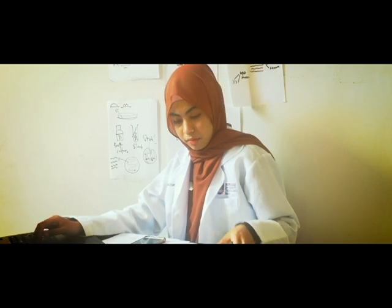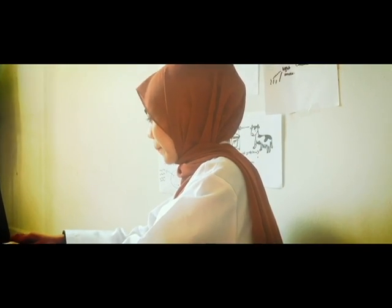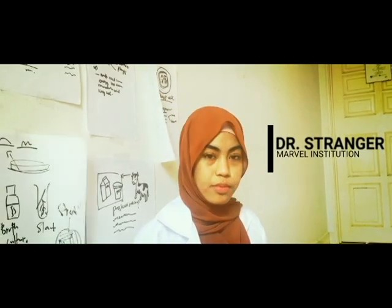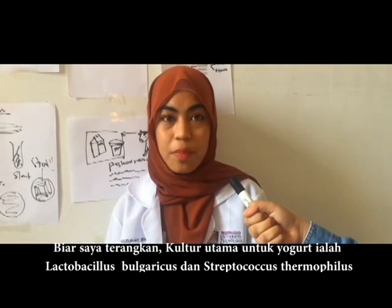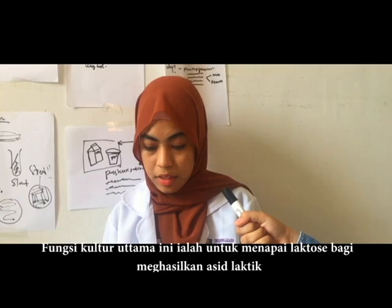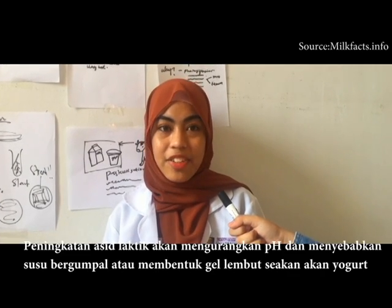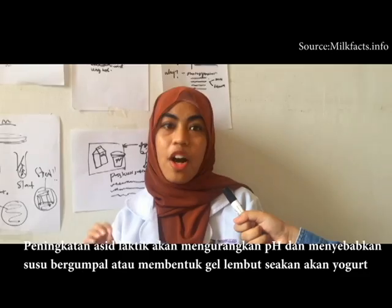Dr., can you explain to us how yogurt is made? Thank you for the question. The main starter cultures in yogurt are Lactobacillus bulgaricus and Streptococcus thermophilus. The function of the starter culture is to ferment lactose to form lactic acid. The increase in lactic acid reduces the pH of the milk to clot, or to form a soft gel that is characteristic of a yogurt.